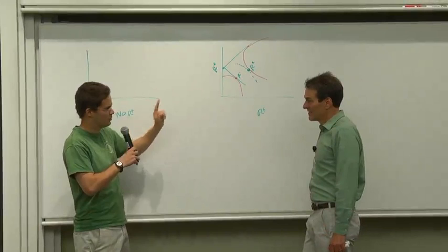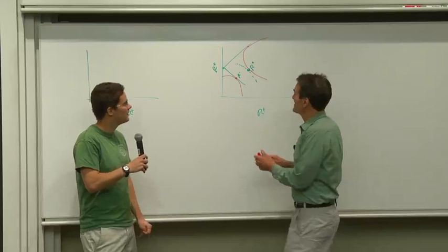So just to clarify, the R-star, the minimum second moment portfolio, is not the same thing as the global minimum variance portfolio, is that right?